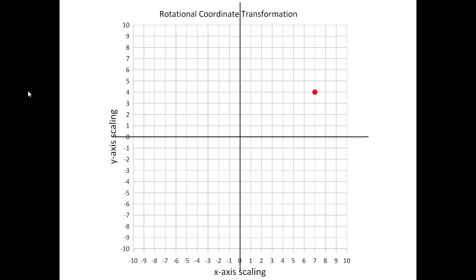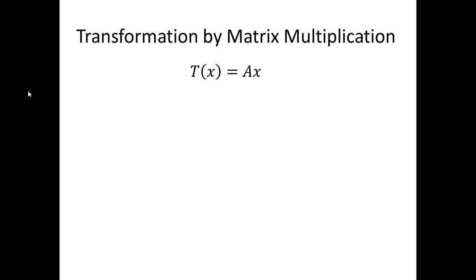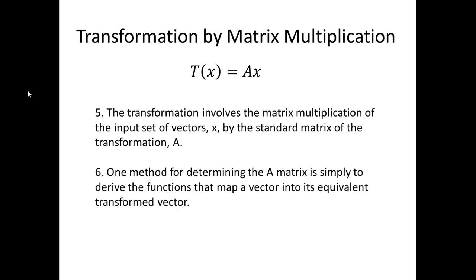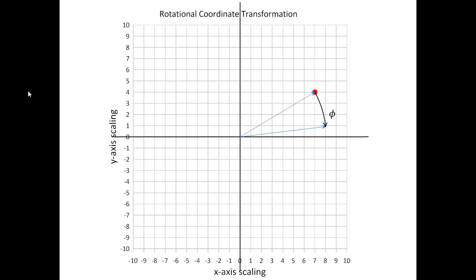Here's our standard point, arbitrary point (7, 4), that we've been tracking through most of this presentation. We're going to rotate this point to a new point through an arbitrary angle phi, and we want to calculate the coordinate in its new position. The transformation involves a matrix multiplication of the input set of vectors by the standard matrix A. We've been deriving the A matrix by deriving functions that map the vector to its equivalent transform vector. For the rotation, we're going to try a slightly different approach. We have the rotation phi, and we need to describe the coordinate in the new position using the change of angle and how that might affect the radius times the trig functions, R cosine theta and R sine theta.